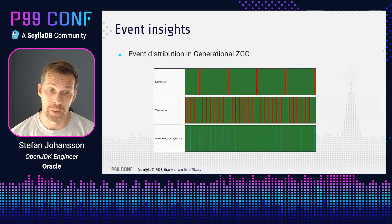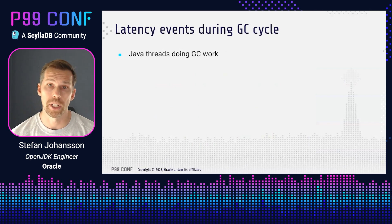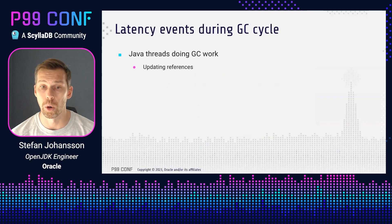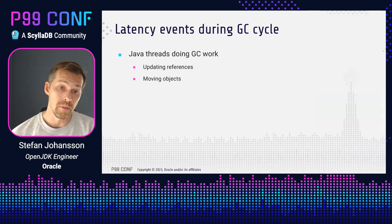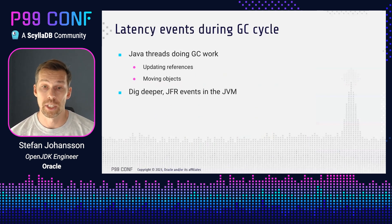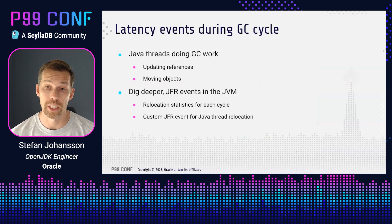This helps us understand that the event latencies seem to occur during GC cycles, so it really looks like the Java threads are helping out doing GC work. What kind of work? It could be updating references to objects that have moved, or the application thread actually has to help out moving an object because it wants to use it but the GC threads haven't gotten around to moving it yet — in that case the Java threads will move the object themselves. To dig deeper, I'm using a JFR event for relocation statistics that is sent by each cycle, and also instrumenting the JVM with a custom JFR event for every time the Java threads do a relocation — that is, moving an object.